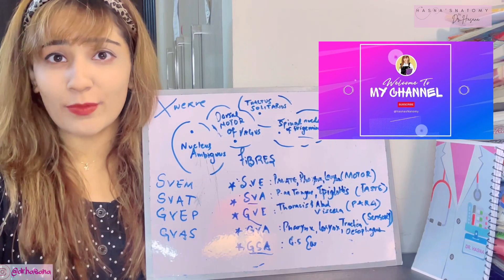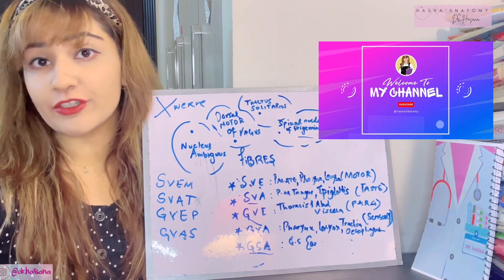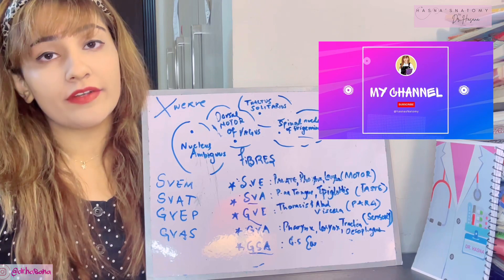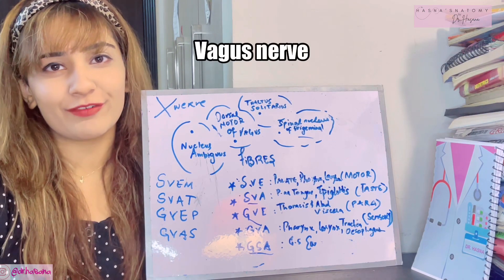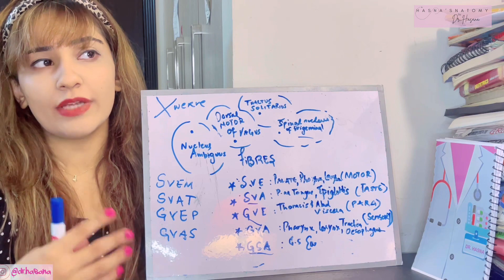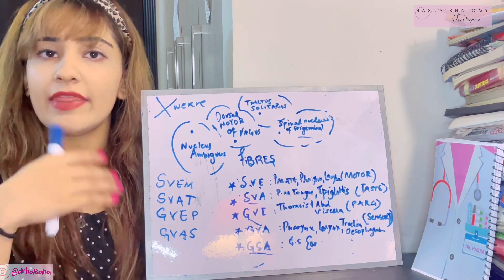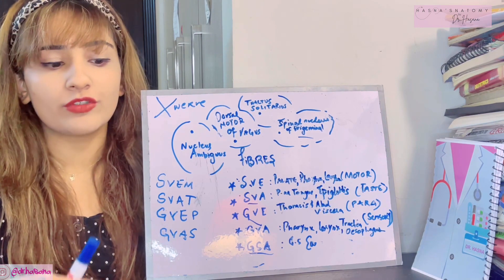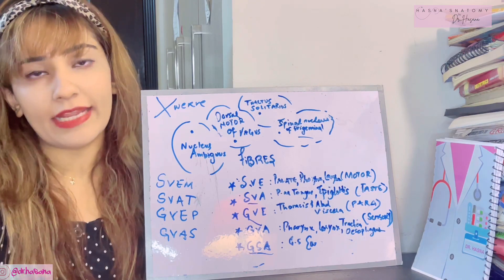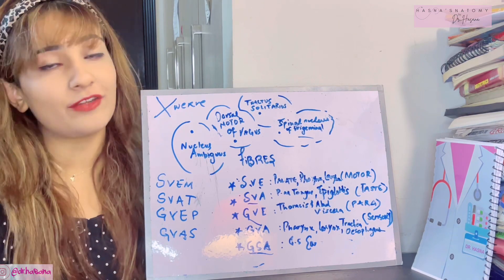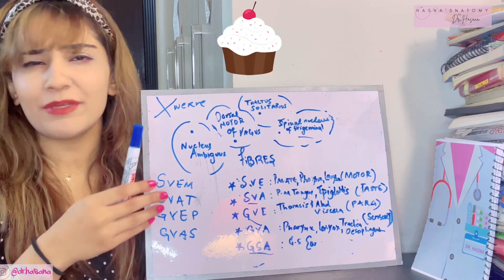Assalamu alaikum, this is Dr. Hasna with Hasna's Anatomy. Welcome back to my channel. Today we are talking about the 10th nerve, or the X nerve — the vagus nerve. We are going to go through a basic neuroanatomy overview and then move on to the head and neck details of the vagus nerve anatomy. Continue watching and do not forget to subscribe to my channel, as I make anatomy a piece of cake.